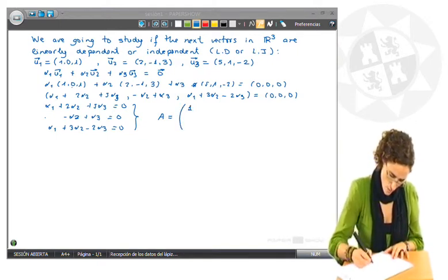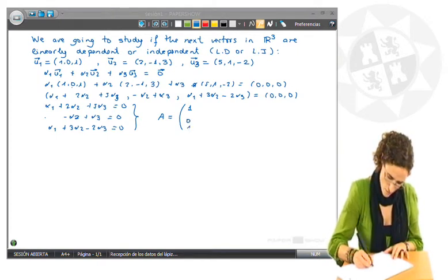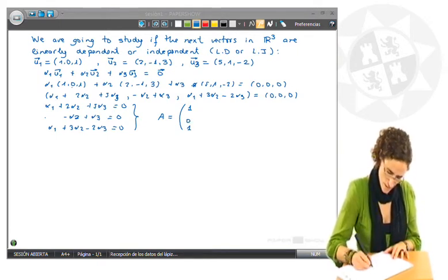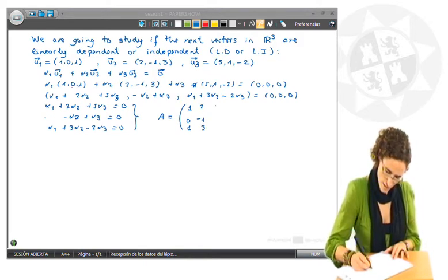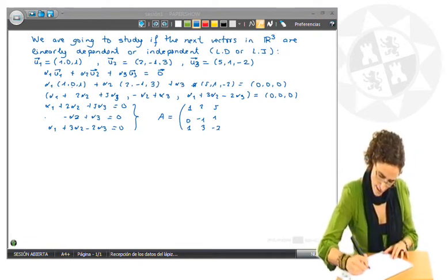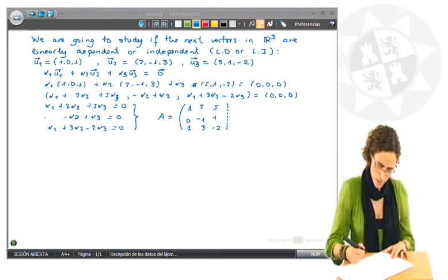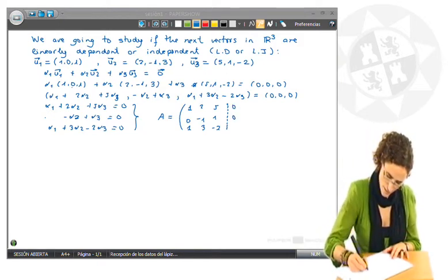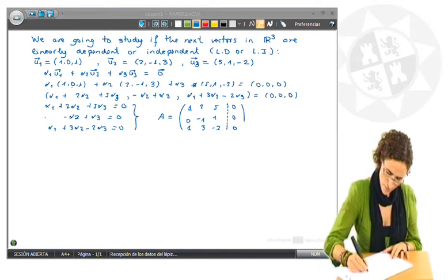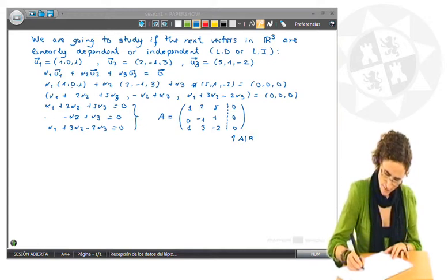is (1, 0, 1) by columns, (2, -1, 3), and (5, 1, -2). And the extended matrix will be calculated with zeros in the fourth column. This would be the extended matrix A bar B.